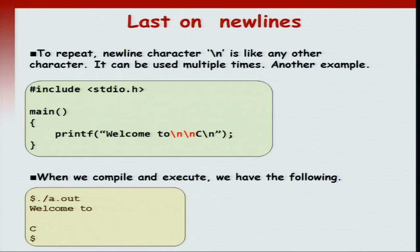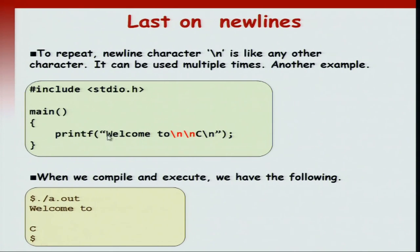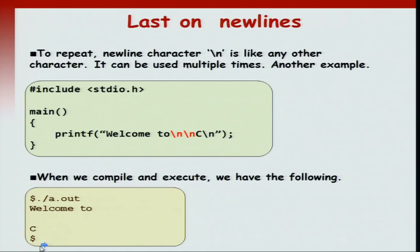The newline character backslash n is like any other character and you can use it multiple times even within a single message. For example, if we have 'welcome to\n\nc\n', we have repeated occurrences of backslash n in the same message. It will print 'welcome to', then a newline, then another blank line, then 'c', followed by a newline. New lines are just like any other characters. The difference is that because it is a special character, it is represented by two letters — backslash n — which together form one character in C called the newline.